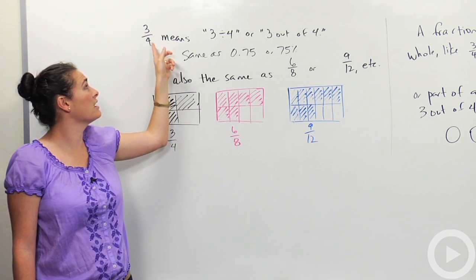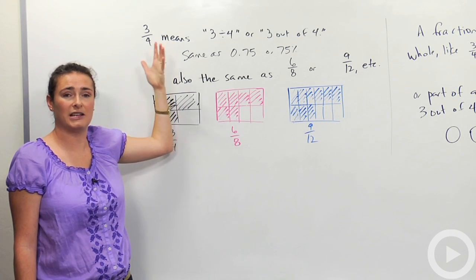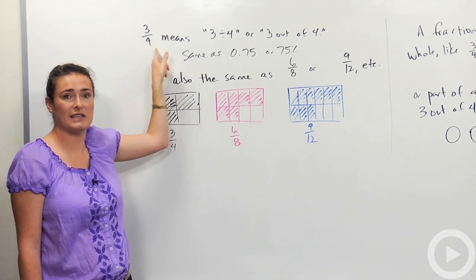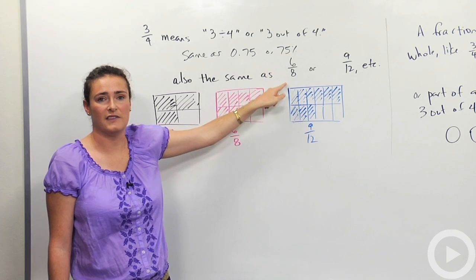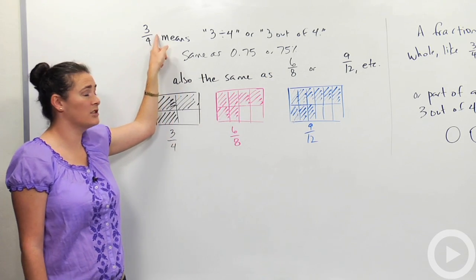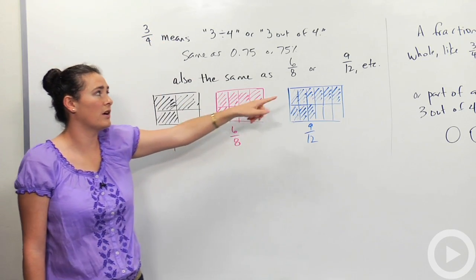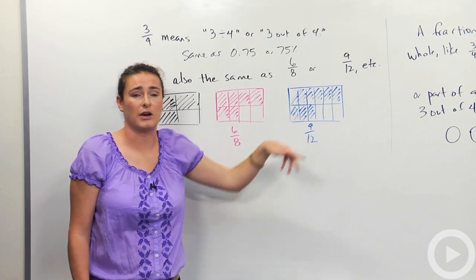If I take 3 over 4, and I multiply top and bottom by 2, 3 times 2 is 6, 4 times 2 is 8. That's where this comes from, the 6 and the 8. Or if I go back to 3 fourths and multiply top and bottom by 3, 3 times 3 is 9, 4 times 3 is 12. That's where this comes from, 9 twelfths.